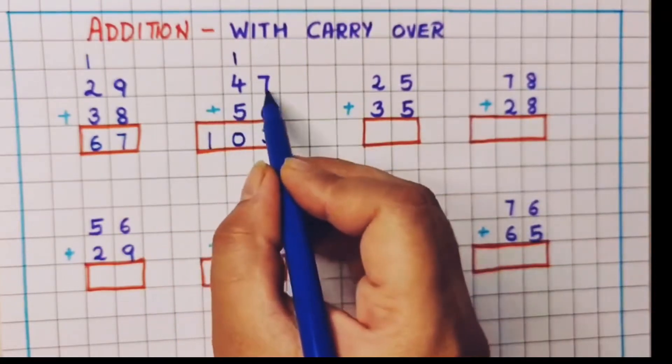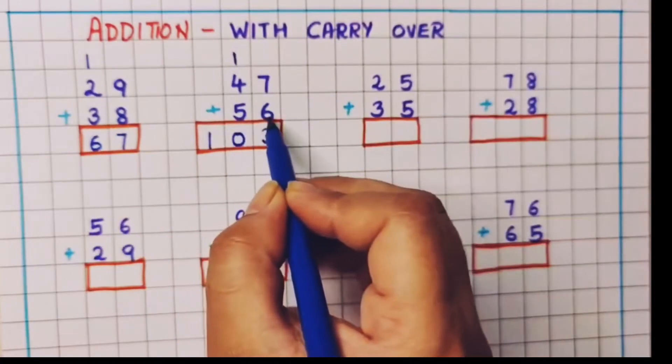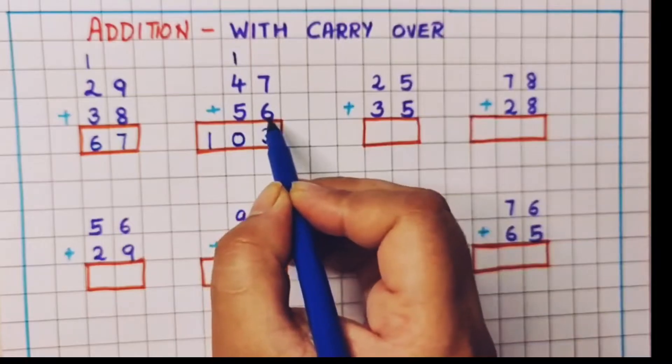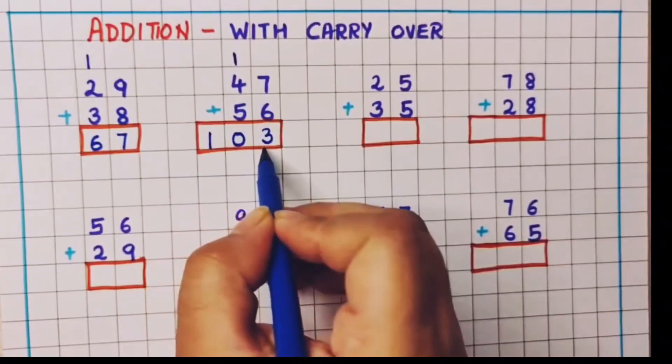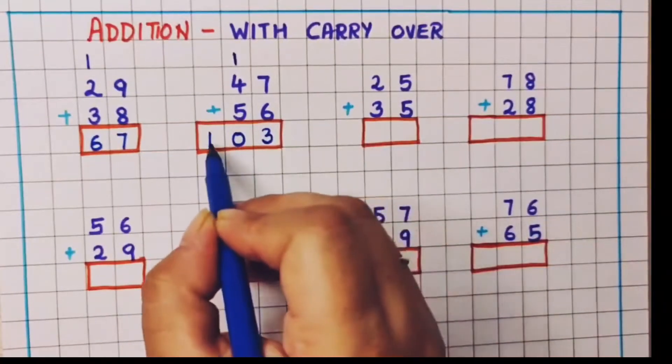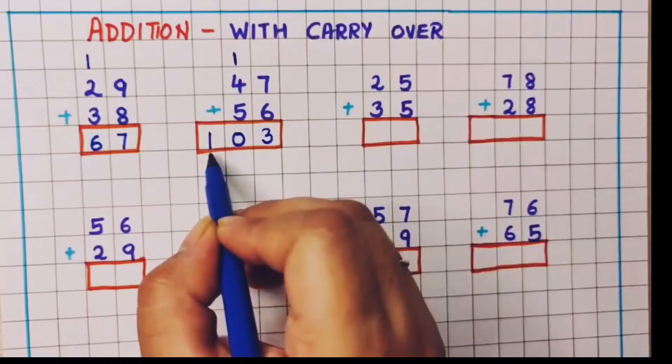Now previously it was a two-digit number, but after addition it became a three-digit number and this 1 is there in the hundreds place.